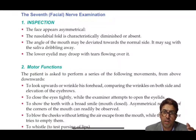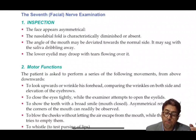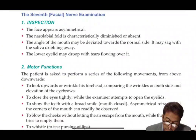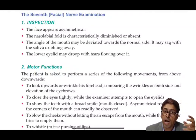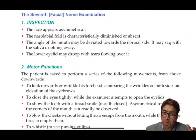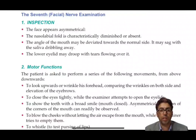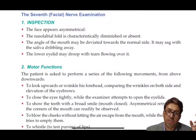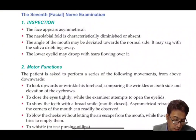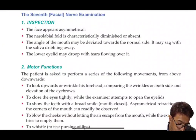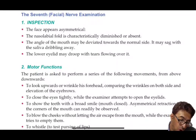Through the chorda tympani, the facial nerve supplies taste sensation from the anterior two-thirds of the tongue. The nerve to stapedius innervates the stapedius muscle, which dampens vibrations in the ear. A lesion to the nerve to stapedius causes hyperacusis — the inability to dampen background noise. In summary, a facial nerve lesion can cause: paralysis of the facial muscles, loss of salivation, loss of taste from the anterior two-thirds of the tongue, loss of the stapedial reflex, and loss of lacrimation.